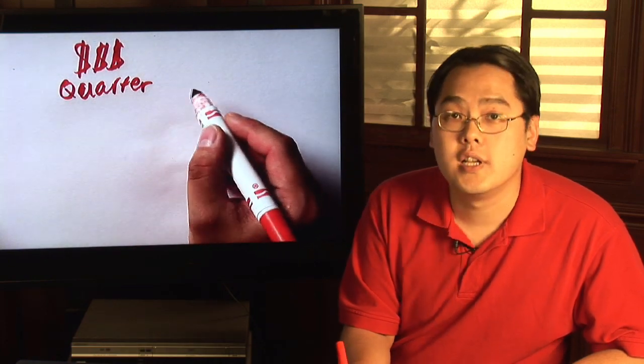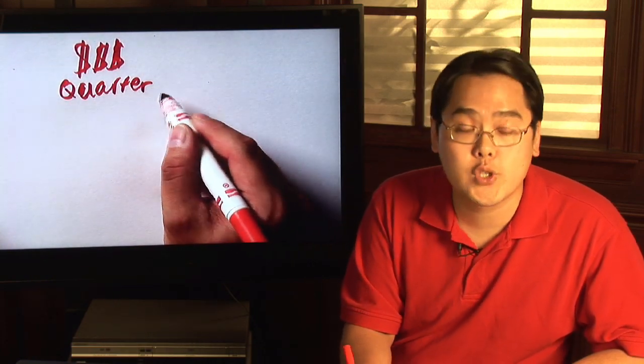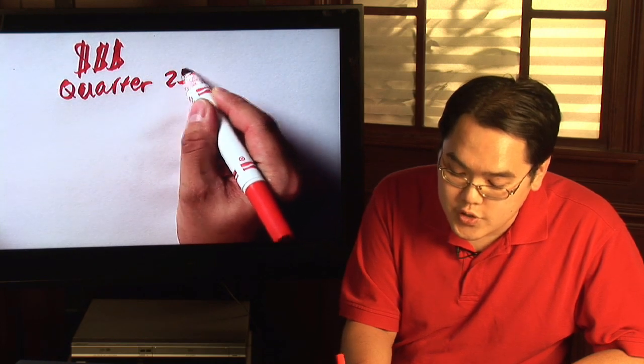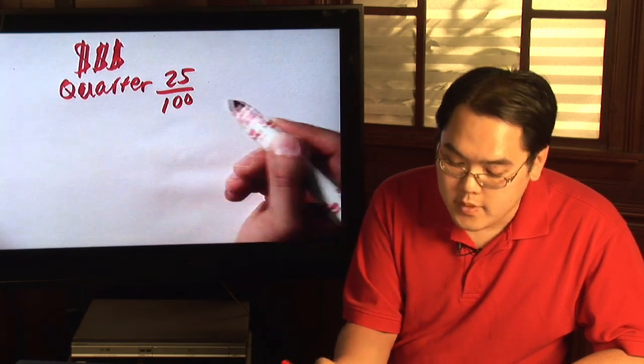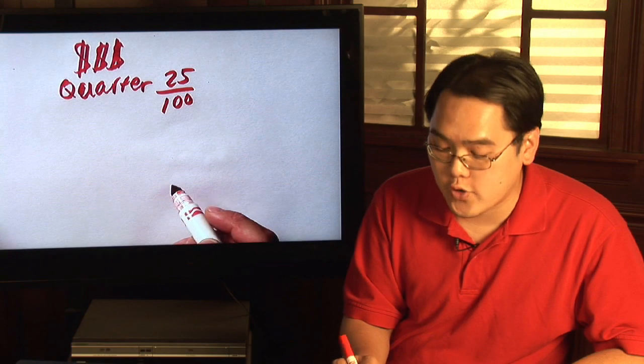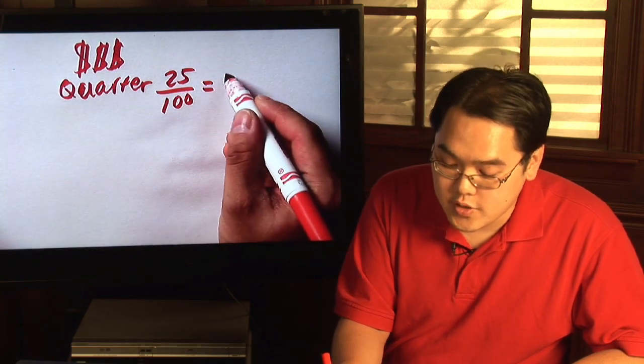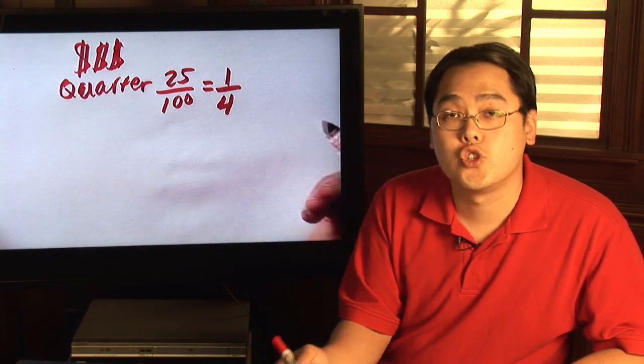Now we know a dollar is a hundred cents and a quarter is twenty-five cents. So what you can do is express a quarter as twenty-five over a hundred, and then teach them to reduce to one over four.